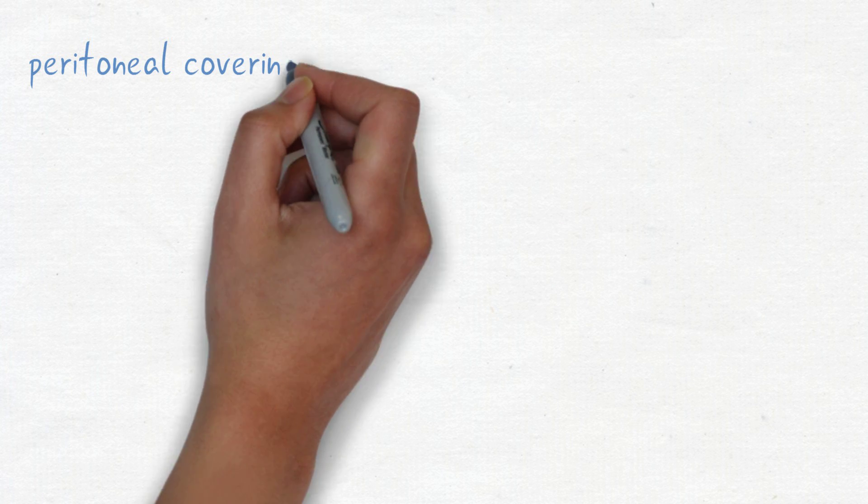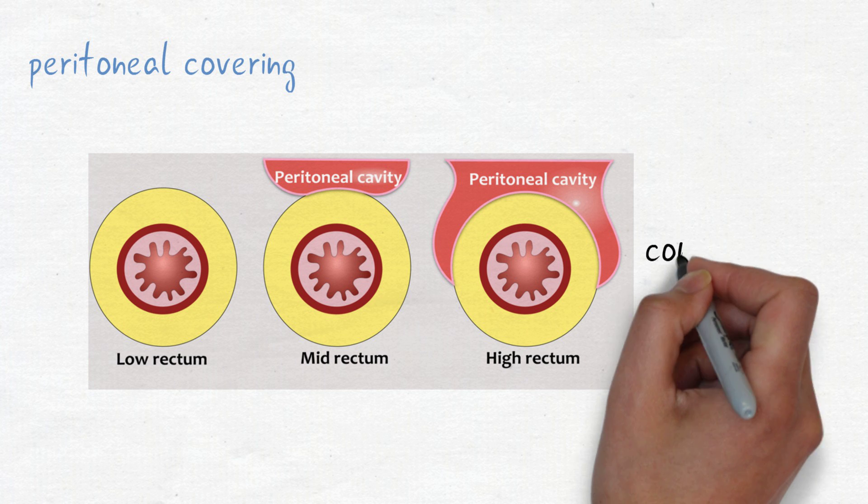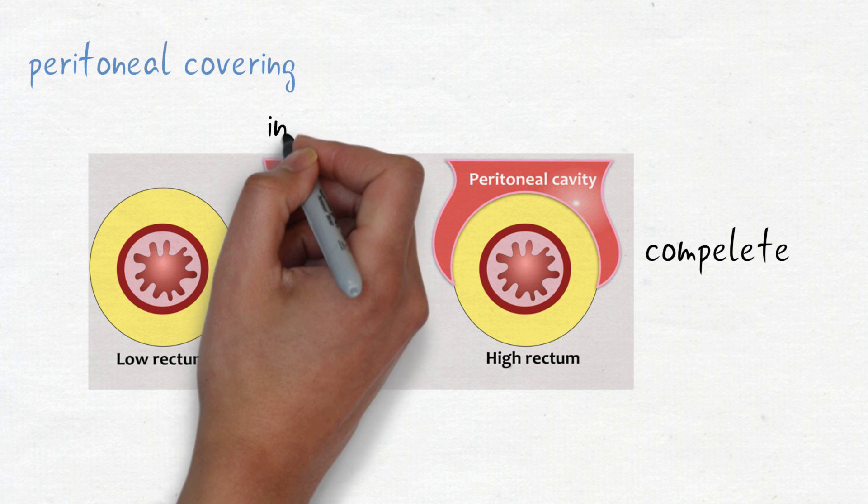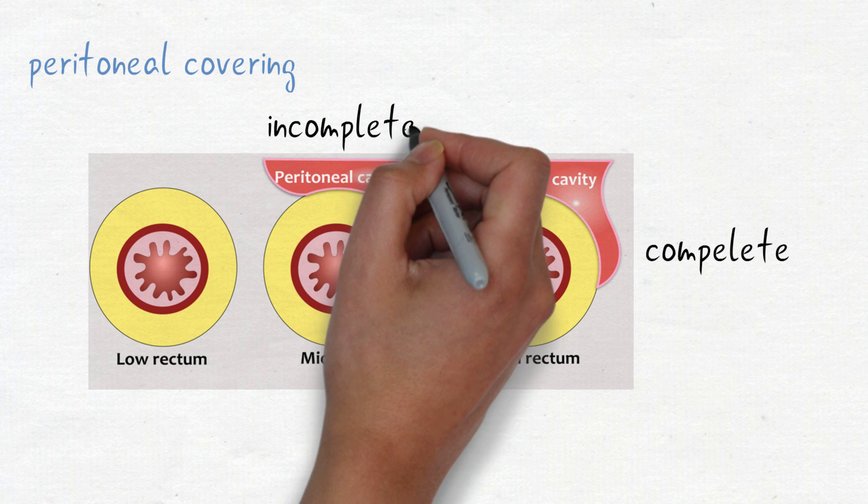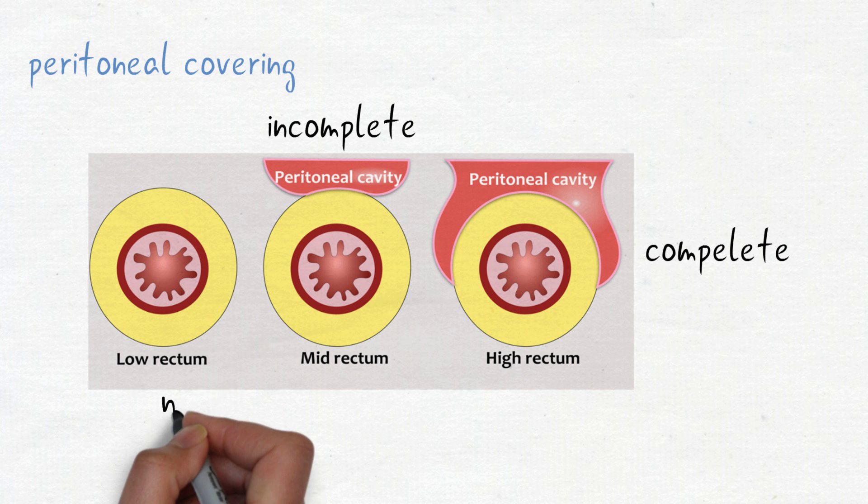Let's see the peritoneal coverage of the rectum. Upper one-third is completely covered whereas middle one-third is partially covered and lower one-third has no peritoneum present.